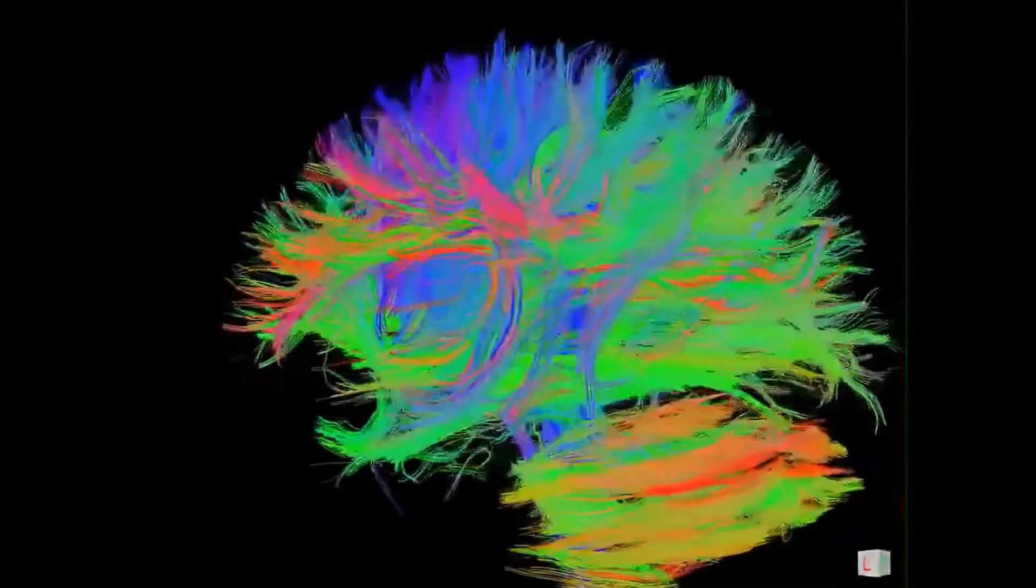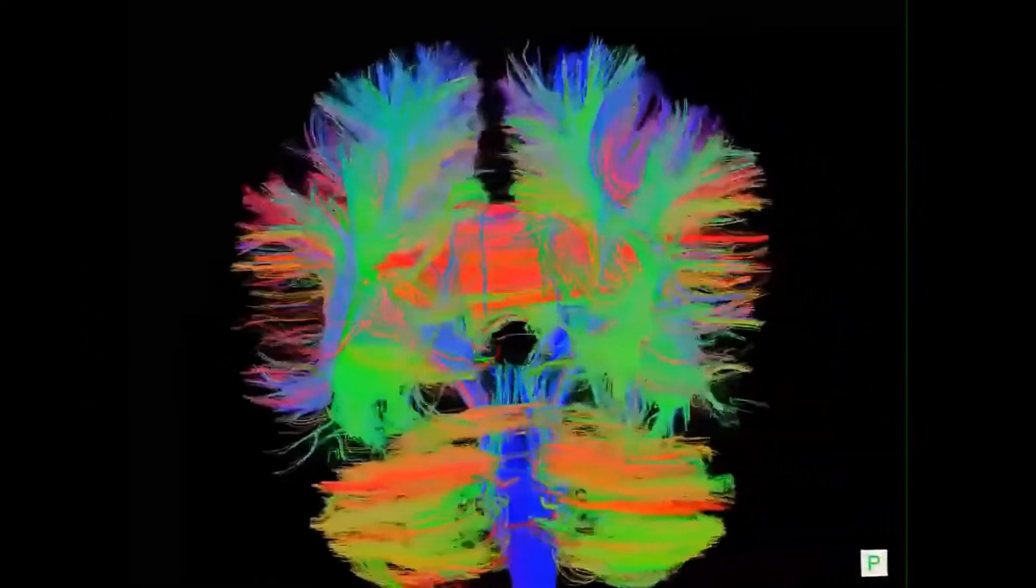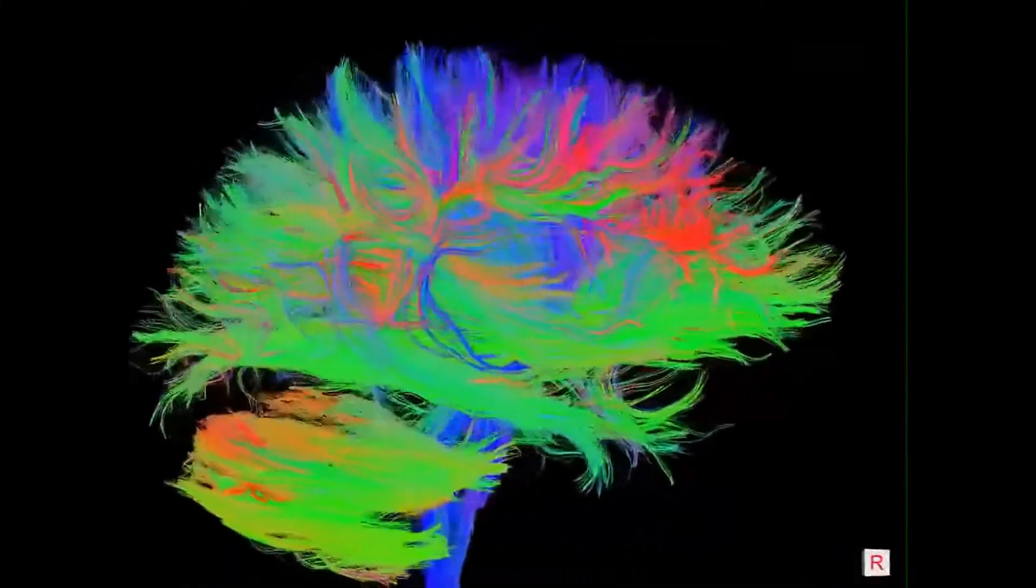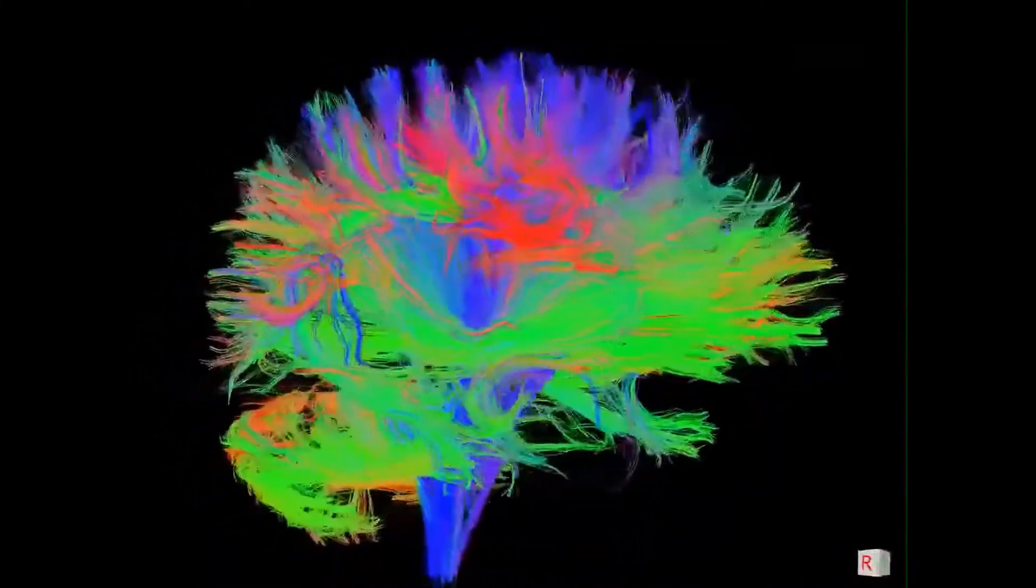But when thinking about diffusion-tensor imaging, most people think of beautiful pictures of rainbow spaghetti. To create this, we need to do a few more things.